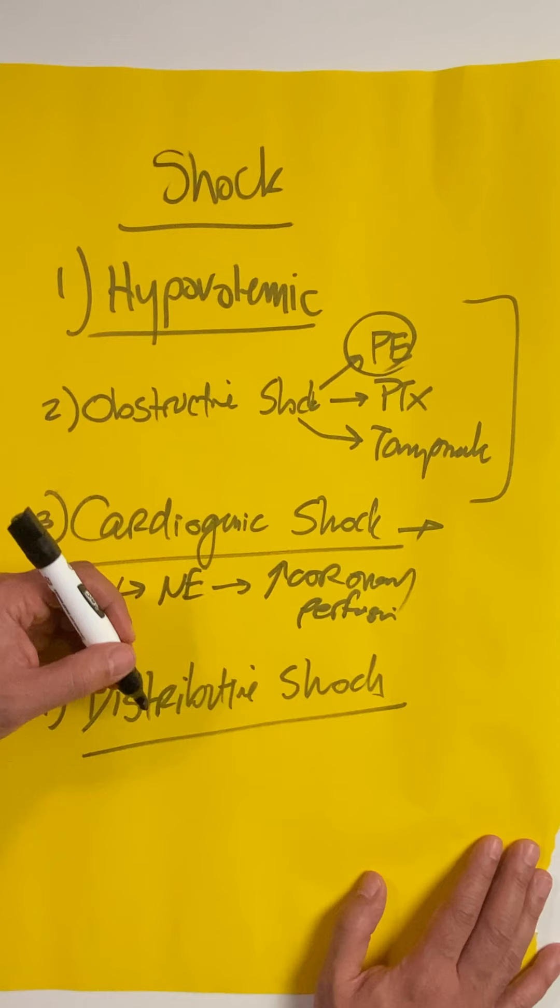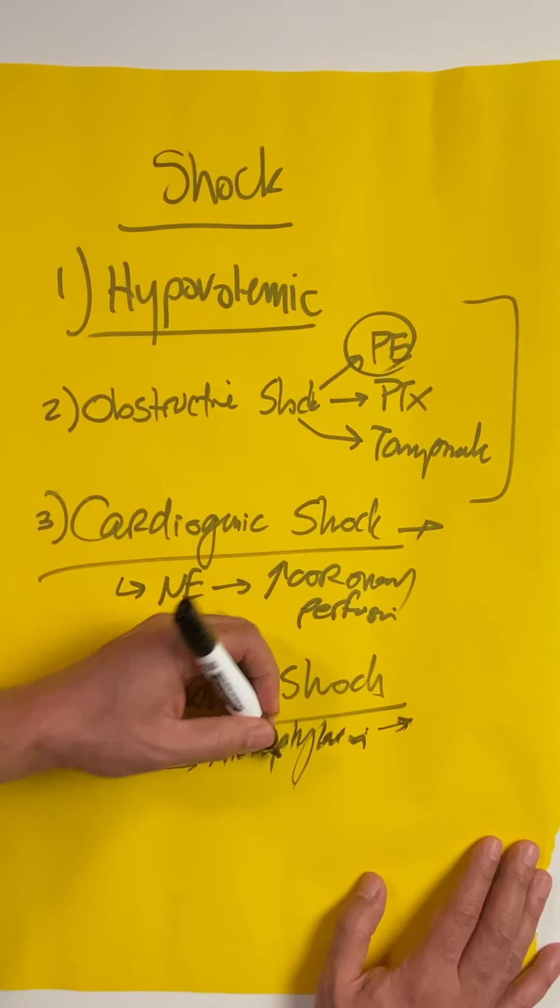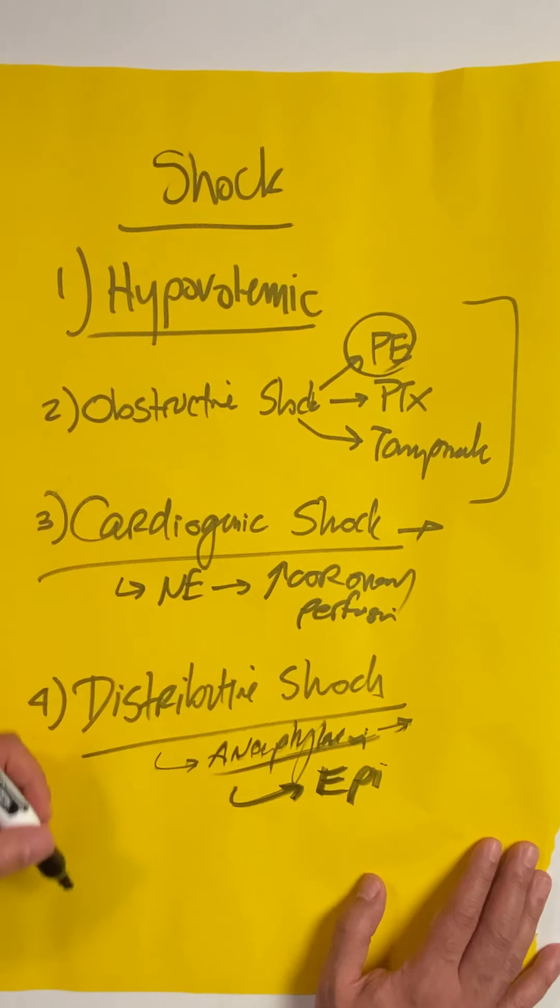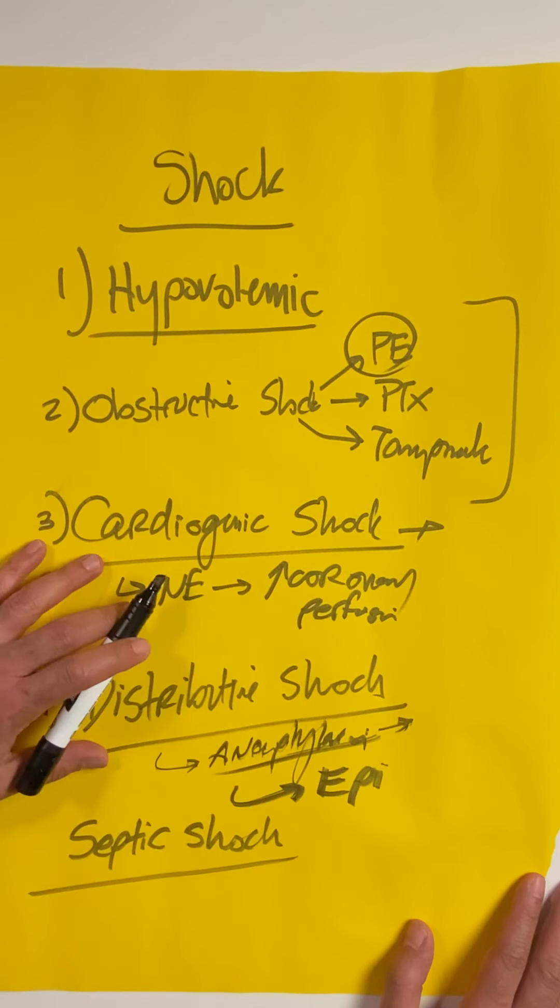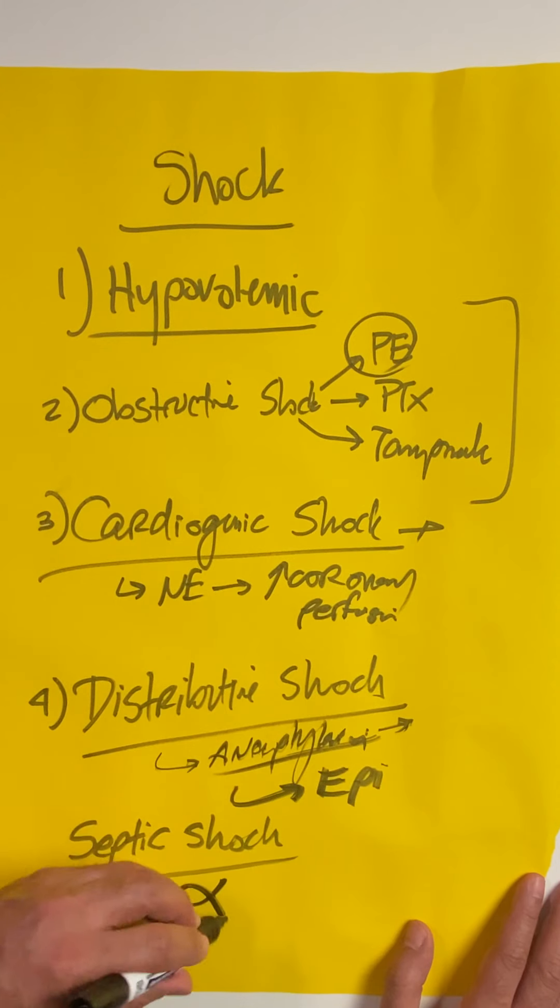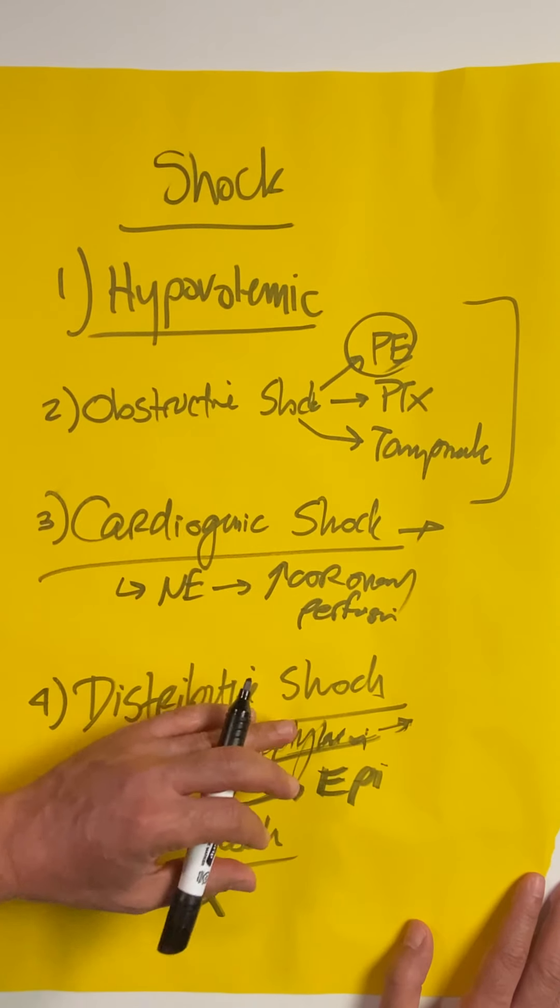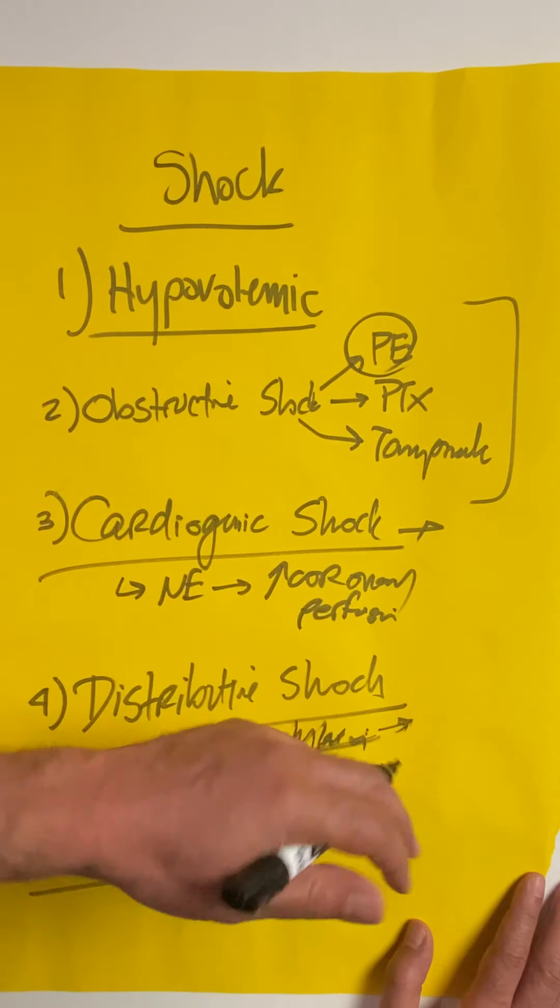Finally, distributive shock. The only type where norepinephrine is not your first choice would be anaphylaxis—a topic for another CritBit. For anaphylaxis, you want to give epinephrine. For everything else, you're going to use norepinephrine, especially for septic shock. With septic shock, you have diffuse vasodilation everywhere in the arteries and in the veins. Because you have arterial vasodilation, the alpha effects help, and because you have venous dilation and pooling of blood in the unstressed volume, using the venoconstrictive properties of norepinephrine helps that person bring blood back into circulation.